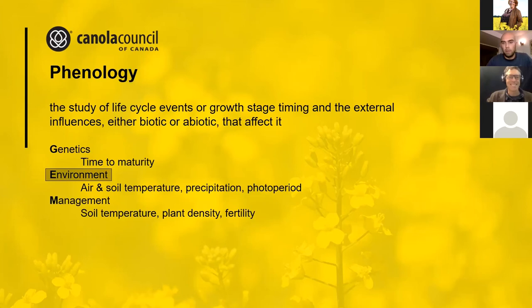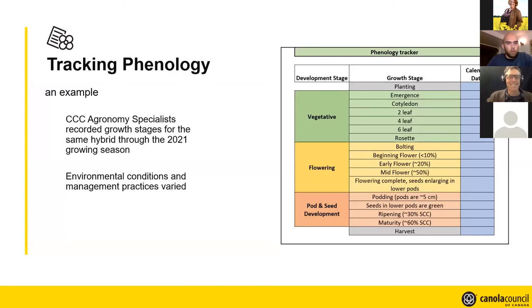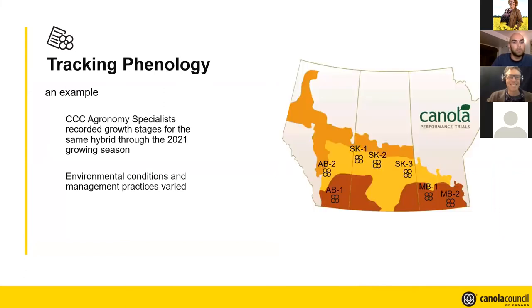I'm going to talk about an exercise that Canola Council agronomy specialists participated in this year — tracking phenology and how you might be able to make this work for you, and how we can find room for improvement just by looking at growth stages and when they occurred. In 2021, Canola Council agronomy specialists recorded growth stages for the same hybrid through the growing season. We went out to the field at least once a week and wrote down the calendar date of all these things. I've been calling this the agronomy specialist farm — it's a big farm, it's Western Canada.